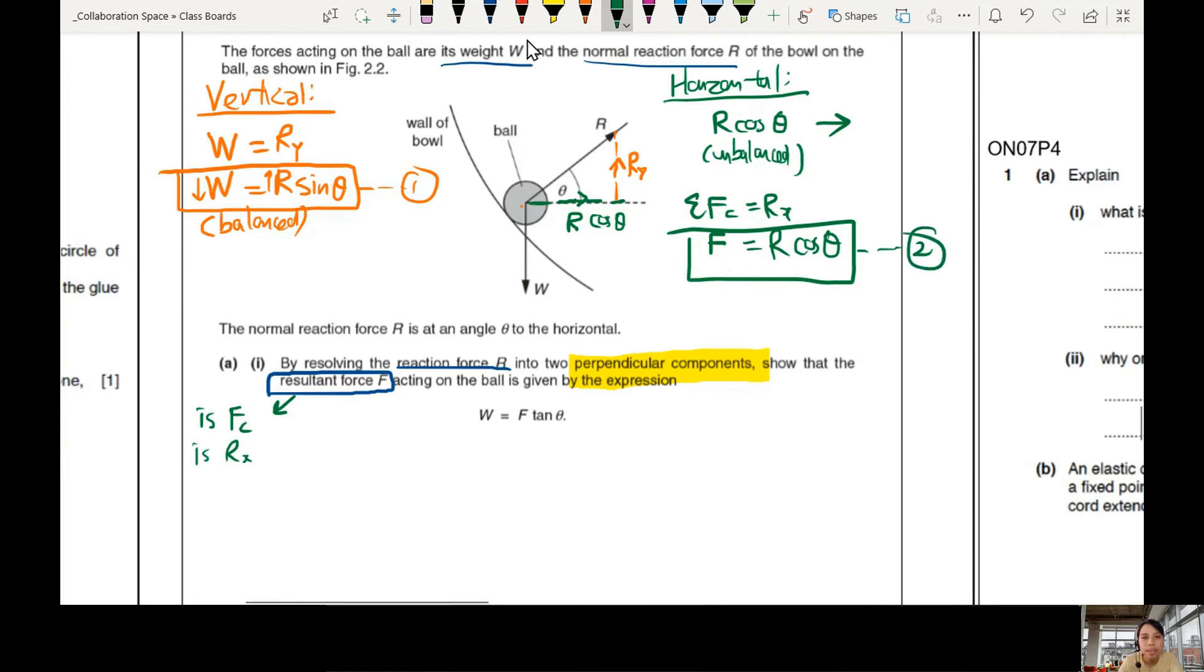In equation 2, we divide 1 over 2. So on top, we will have W and then R sine theta. Okay, divide by whatever at the bottom. This is F R cos theta.